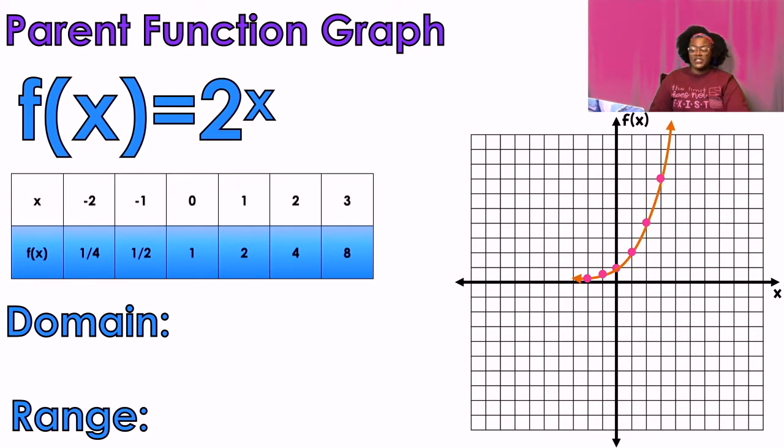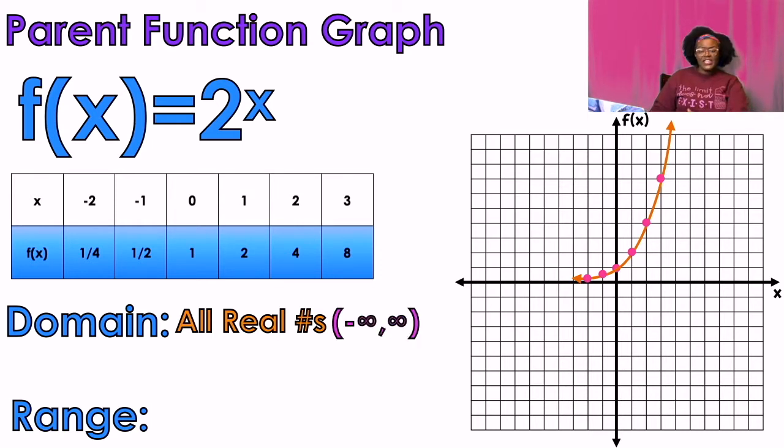So the domain of this function, look, it keeps going left and it keeps going right forever and ever. So the domain of this function is going to be all real numbers. Remember, arrows on both sides are real numbers for your domain. Negative infinity to positive infinity. Set notation versus interval notation. My range, it's low and it's not going lower than that zero, if you notice. So y is greater than zero or zero to infinity. Again, set versus interval notation.